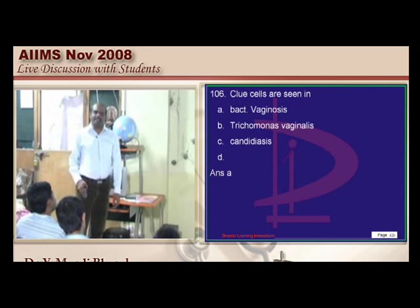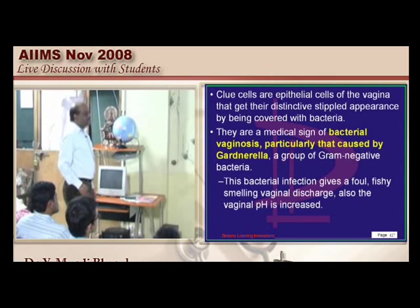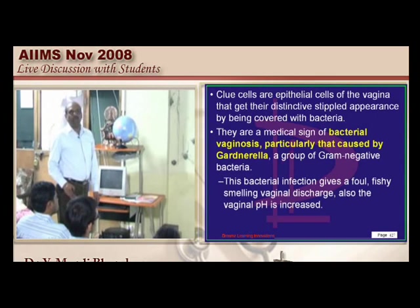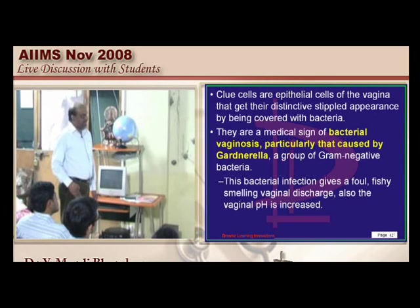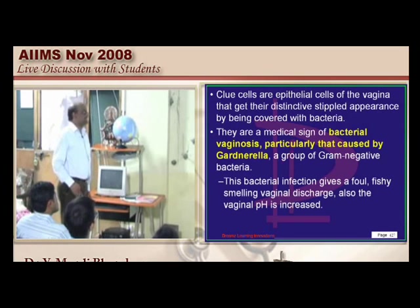Clue cells are seen in bacterial vaginosis, particularly caused by Gardnerella, where the epithelial cells of the vagina get a stippled appearance called clue cells.